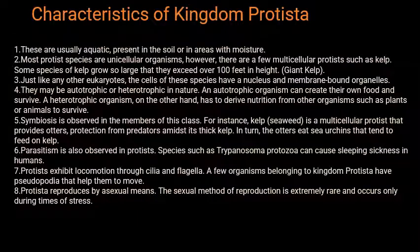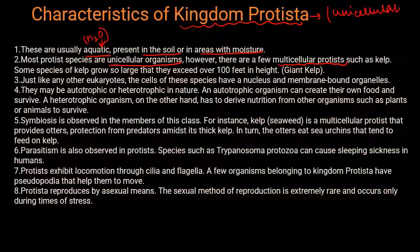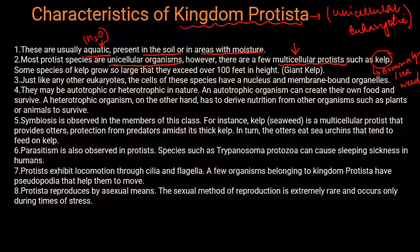Protista are usually aquatic, living in water, or present in soil or areas with moisture. Most Protist species are unicellular, however there are a few multicellular exceptions, such as kelp — a brown algae or seaweed used commercially in making toothpaste. Kelp is one exceptional multicellular organism under Kingdom Protista.